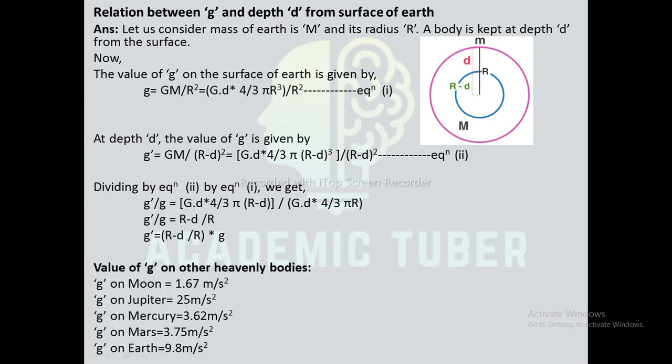Values of g on various heavenly bodies: on the Moon, g = 1.67 m/s²; on Jupiter, g = 25 m/s²; on Mercury, g = 3.62 m/s²; on Mars, g = 3.75 m/s²; on Earth, g = 9.8 m/s².